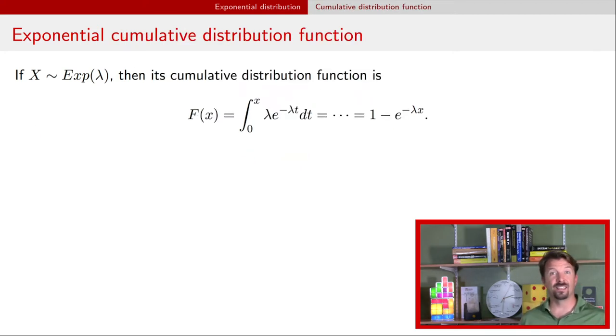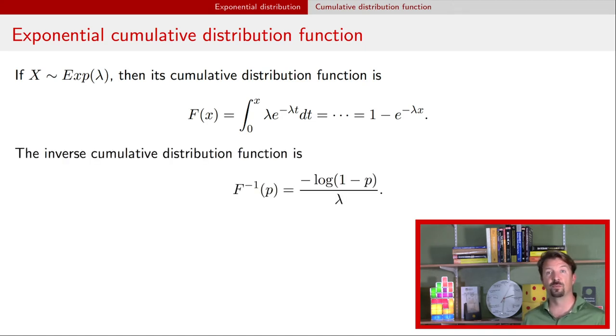We can calculate the cumulative distribution function from that PDF, and the cumulative distribution function has a nice simple form. It's just 1 minus e to the negative lambda x. This can also be inverted to find what might be called the inverse cumulative distribution function, or sometimes the quantile function. The inverse cumulative distribution function is just this: negative log 1 minus p divided by that rate parameter lambda.